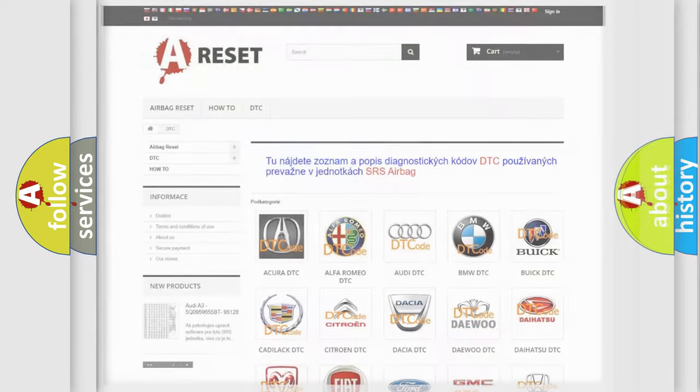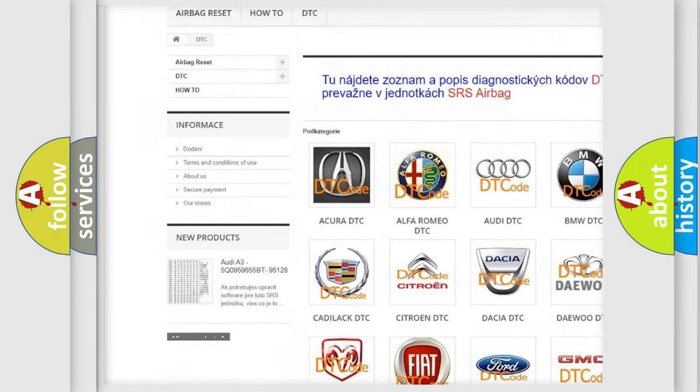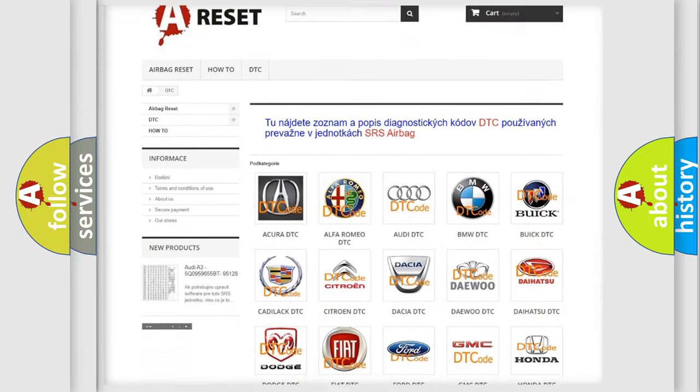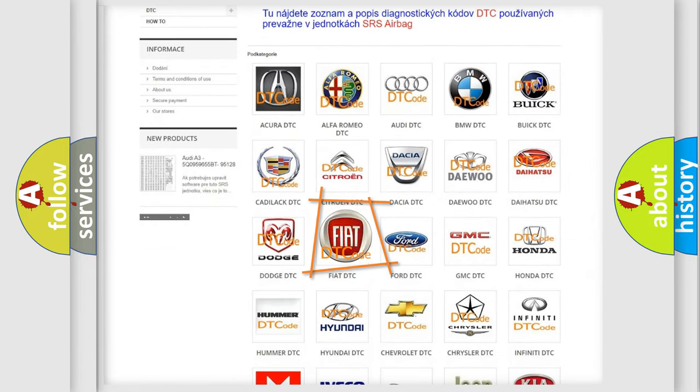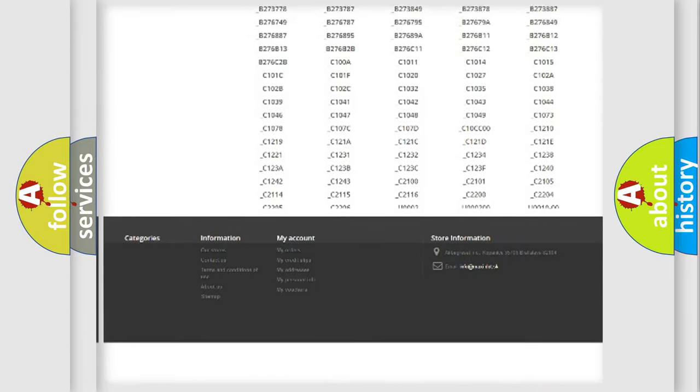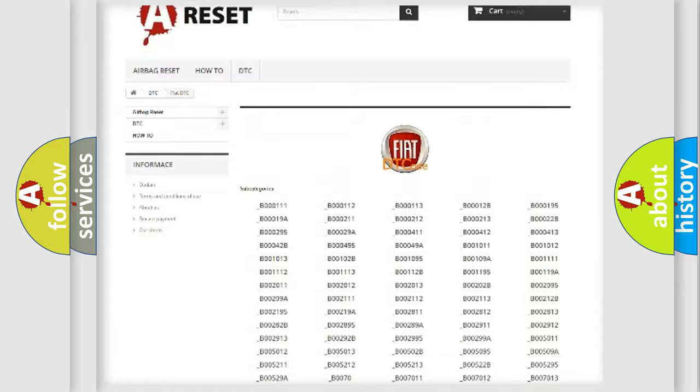Our website airbagreset.sk produces useful videos for you. You do not have to go through the OBD2 protocol anymore to know how to troubleshoot any car breakdown. You will find all the diagnostic codes that can be diagnosed in Fiat vehicles.